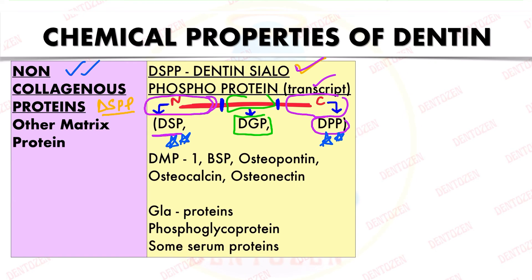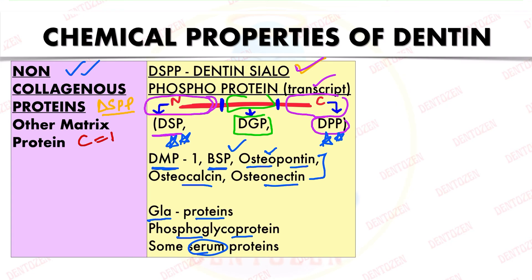Other non-collagenous proteins include dentine matrix protein 1 (DMP1), and bone-like proteins such as bone sialoprotein, osteopontin, osteocalcin, and osteonectin — reflecting the similarity between dentine and bone. Additional proteins include glutamate proteins, phosphoglycoproteins, and some serum proteins. Collagen helps in mineralization, while non-collagenous proteins regulate mineralization, controlling where mineral is deposited or inhibited.